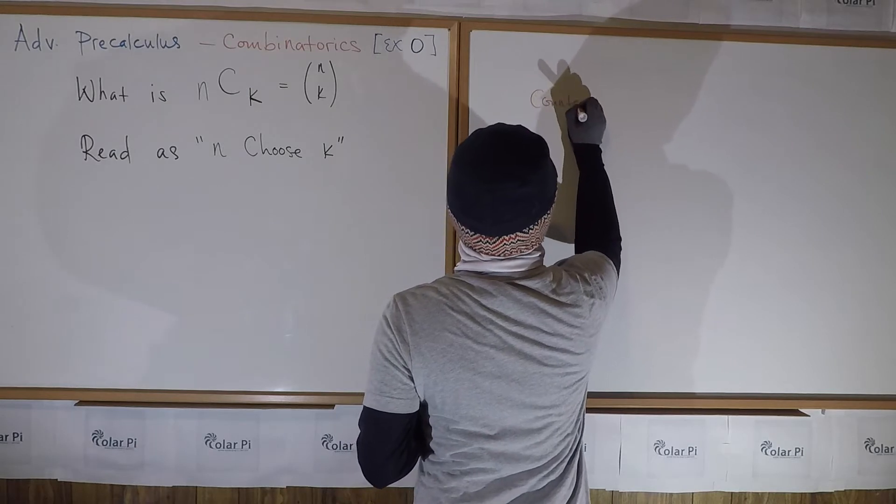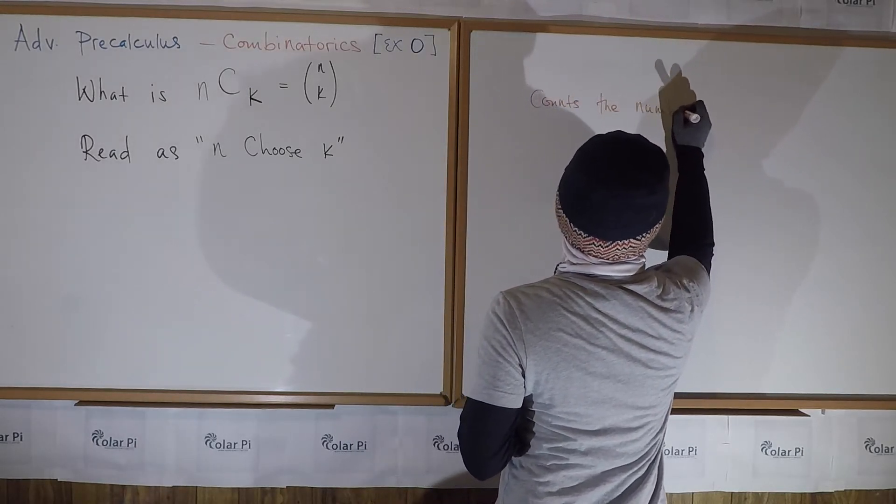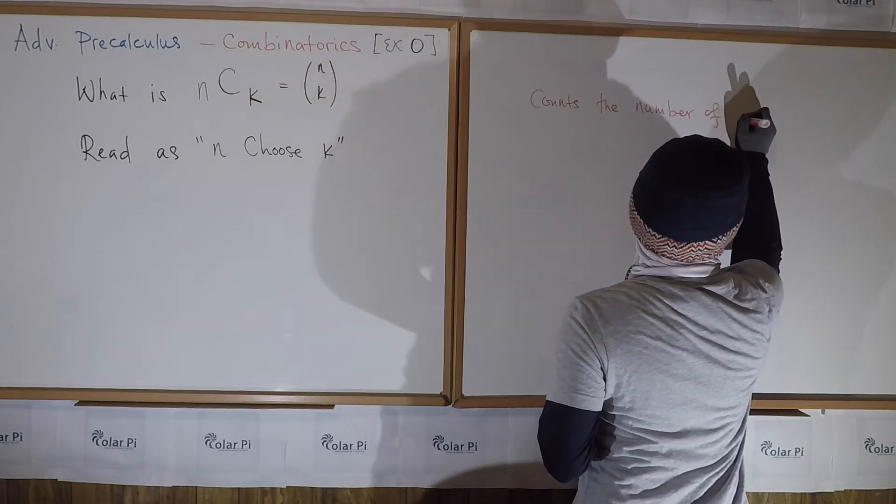What it does is this: it counts the number of ways - and of course implicit in this is the number of different ways - the number of ways to choose...